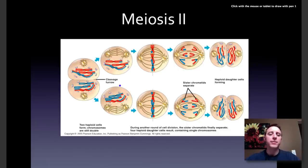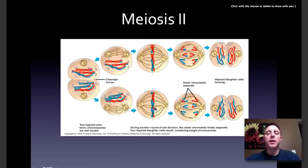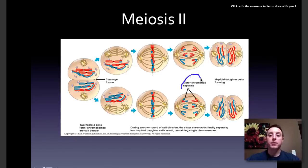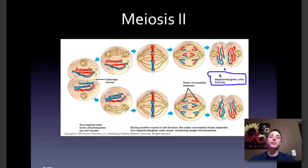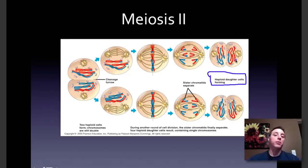The chromosomes are probably already condensed, but if they loosened up they will come back together. The spindle apparatus and spindle fibers form. All the chromosomes line up right along the center, and now when the chromosomes are pulled apart, the sister chromatids do separate. We end up with four haploid daughter cells. All of these cells are genetically unique — both in whether they have chromosomes from mom or from dad, and also because of crossing over.